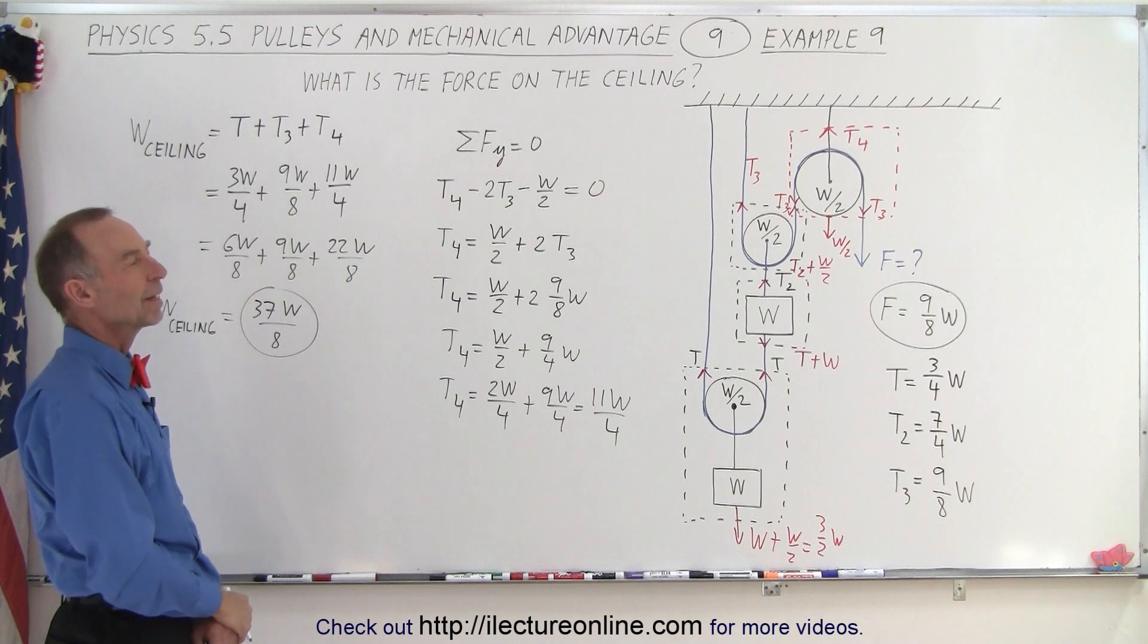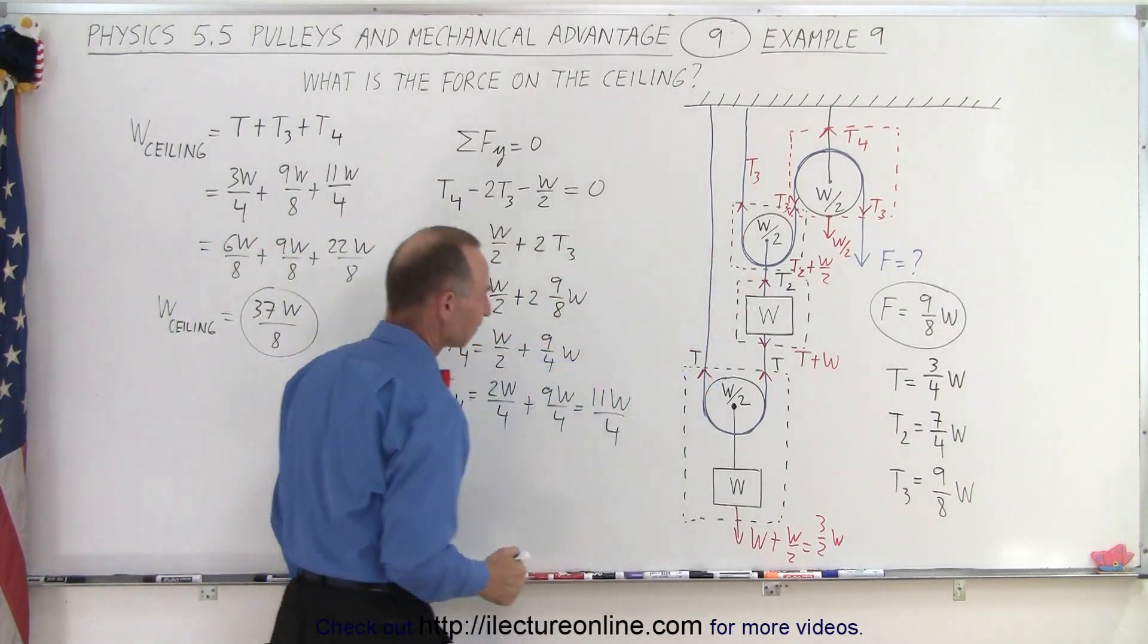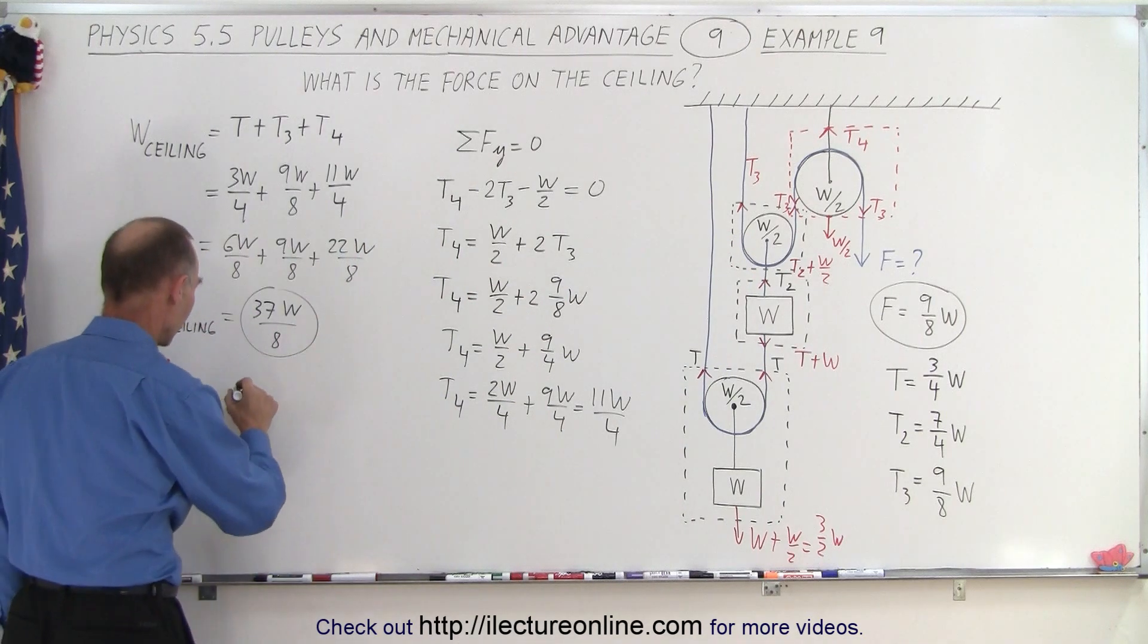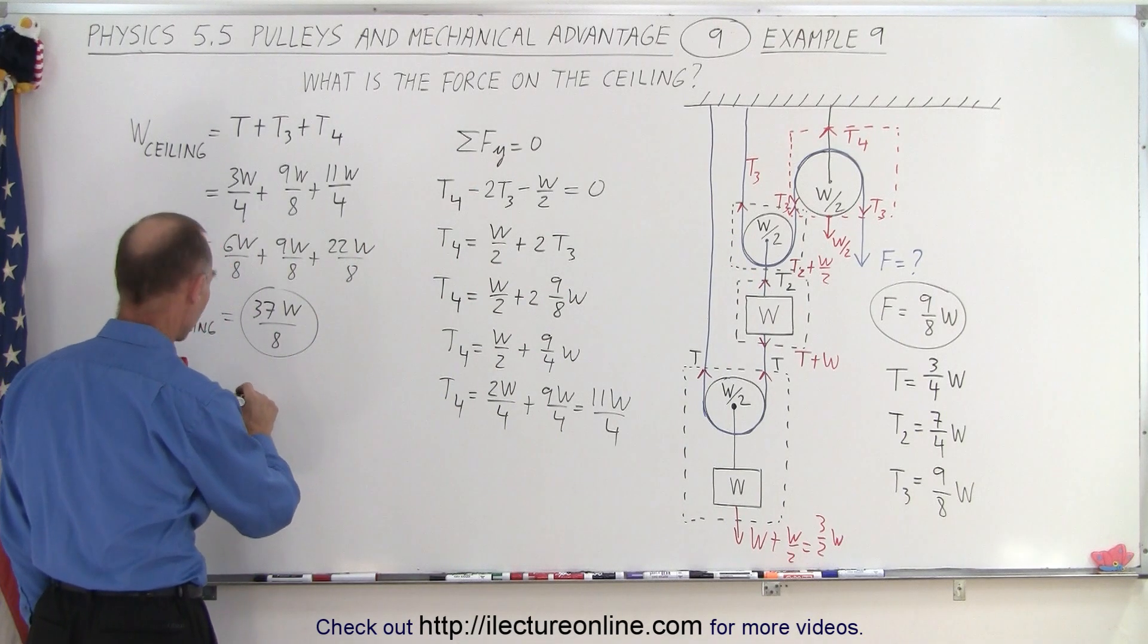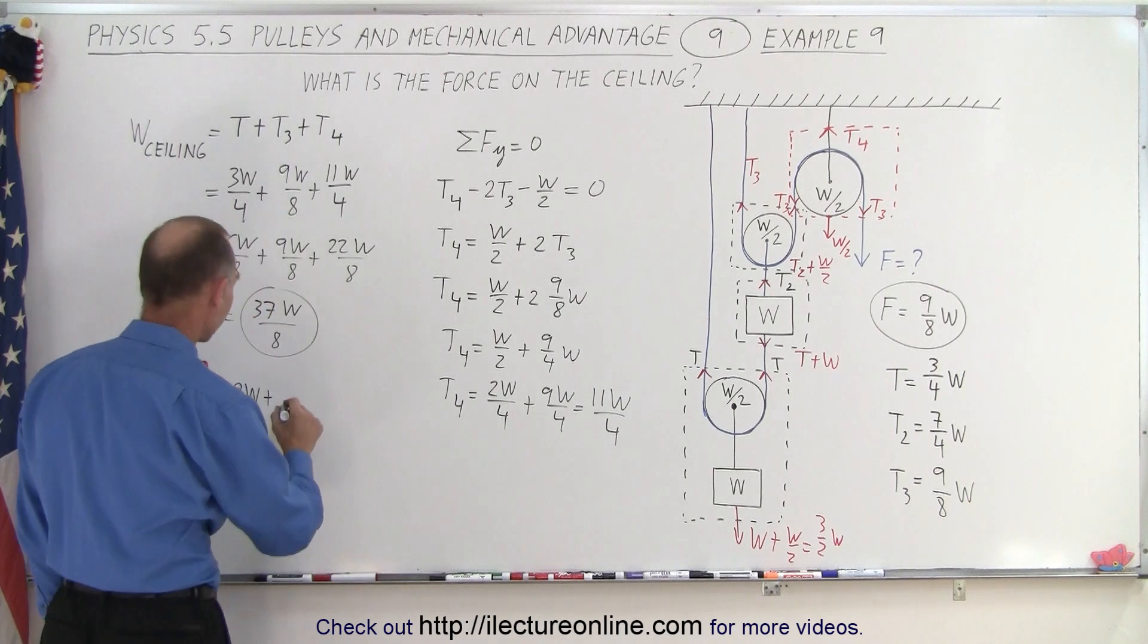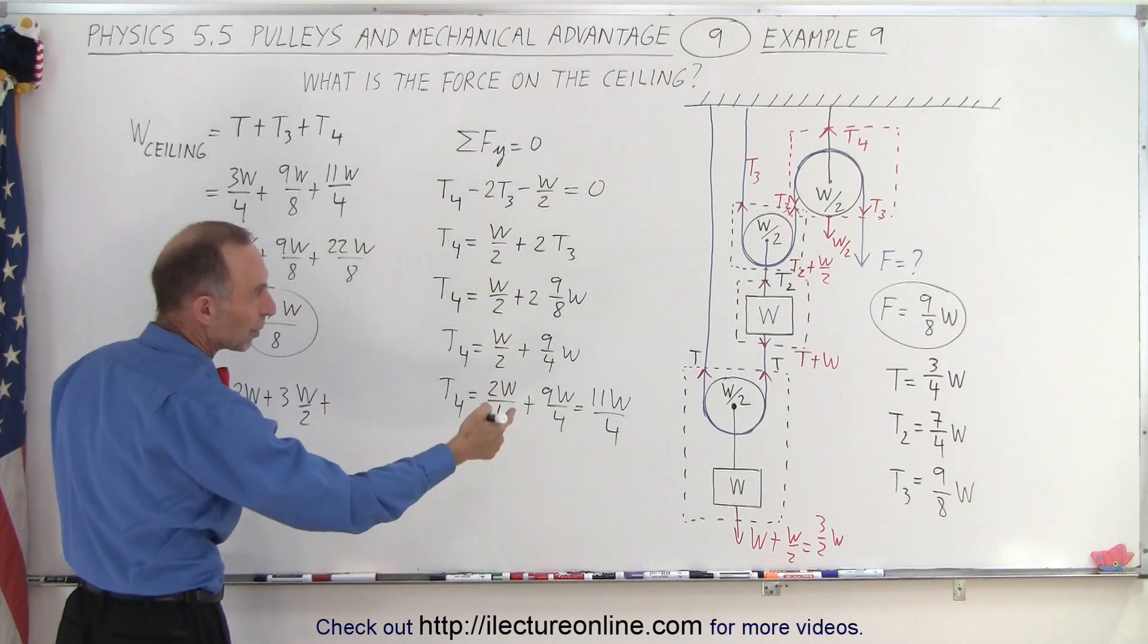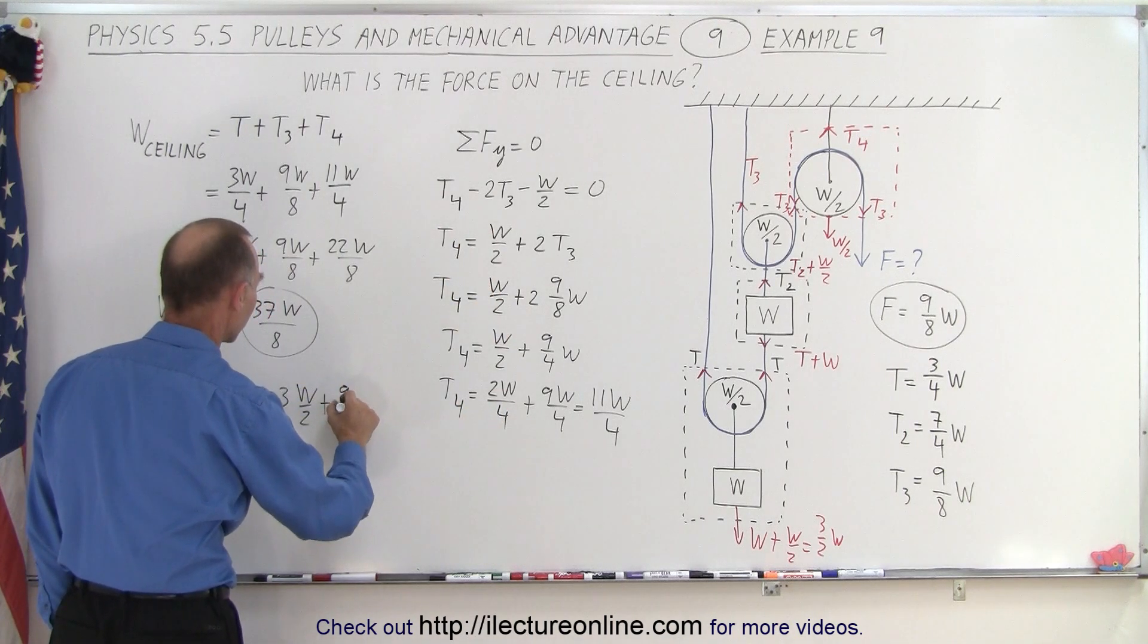Okay, now, does that make sense? Let's add up all the weights and see what we get. So we end up with W plus W, so we have two W's, plus three half W's, plus the force by which we pull, which is 9 over 8W.